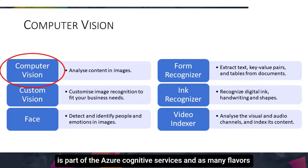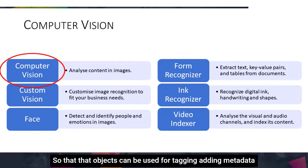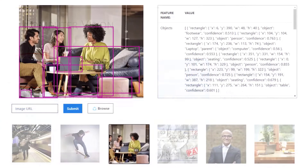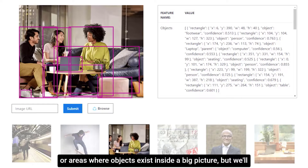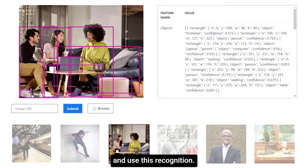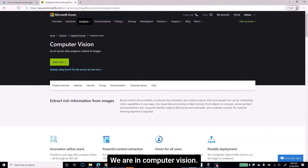Computer Vision is part of Azure Cognitive Services and has many capabilities. We'll focus on image recognition — identifying objects inside an image — so that those objects can be used for tagging, adding metadata, and categorizing that image automatically using Logic Apps into a folder structure. Computer Vision works on the basis of identifying rectangles or areas where objects exist inside a picture, and we'll use this object recognition as a tag to categorize our images in OneDrive.